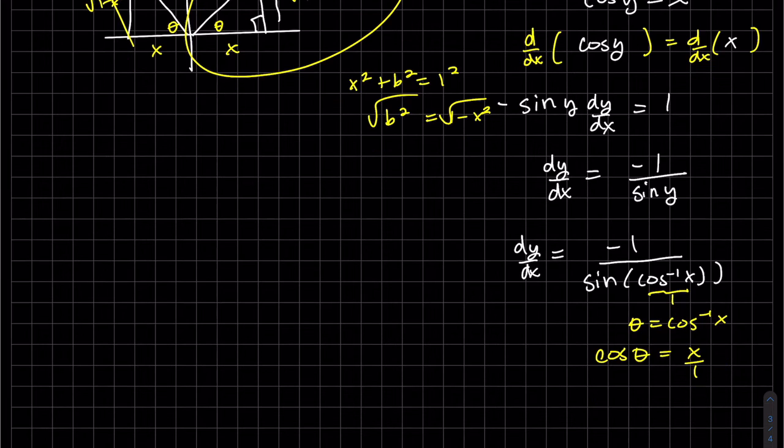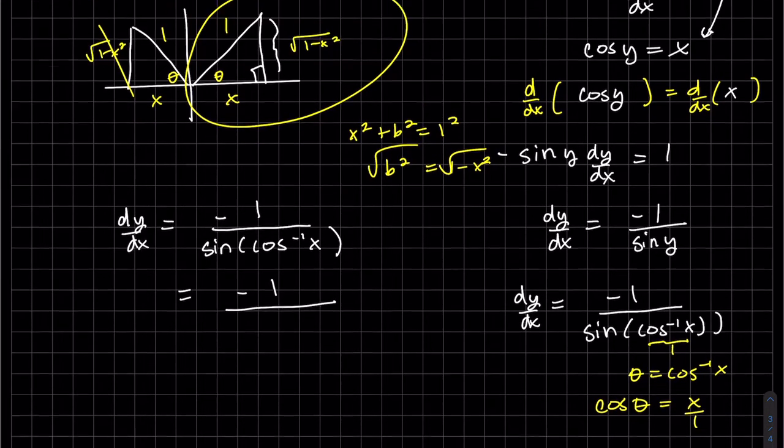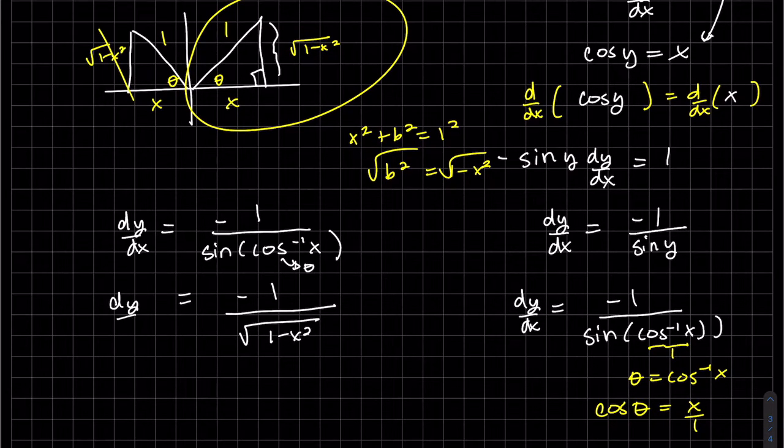So now, let me write it here. So we want the sine. This is my angle theta. So we want the sine of that theta. The sine of that theta is opposite over 1. We don't need that 1 on the bottom. And there's my derivative of cosine inverse.